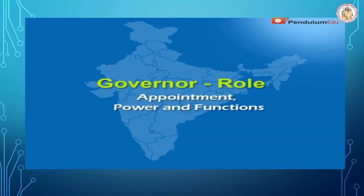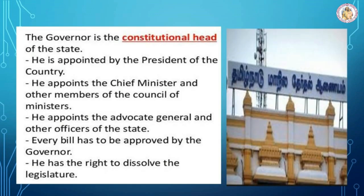Now we will see the powers and functions of the governor. The governor is the head of the state executive and has enormous powers. All the administration is carried on in his name. He is the chancellor of government universities in the state. All bills become law only after his assent. He appoints important officials of the state government such as the advocate general, chairman and members of the state public service commission, state election commissioner, and vice chancellors of state universities.